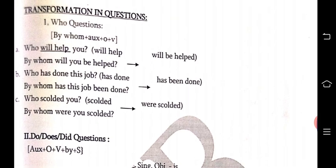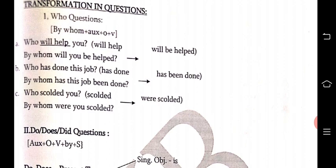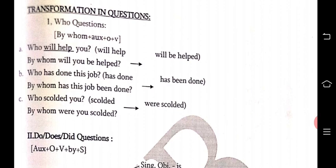For WH questions starting with 'who,' the formula is: By whom + auxiliary + object + verb. Examples: 'Who will help you?' — 'will help' → 'will be helped' → 'By whom will you be helped?' 'Who has done this job?' — 'has done' → 'has been done' → 'By whom has this job been done?' 'Who scolded you?' — 'scolded' is past → 'were scolded' → 'By whom were you scolded?'